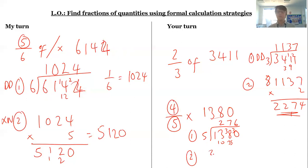So 276 times 4: 4 times 6 is 24, 4 times 7 is 28, plus 2 is 30, 4 times 2 is 8, plus 3 is 11. I get 1,104.